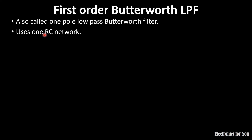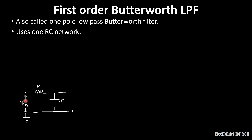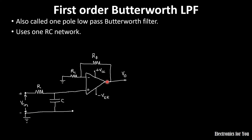A passive low pass filter looks like this — the input is applied to this terminal and the output is taken across the capacitor. Now we are using an op-amp here, and the op-amp circuit will look like this. This is a non-inverting amplifier; this is the feedback resistance of the non-inverting amplifier, and this one is the input resistor.